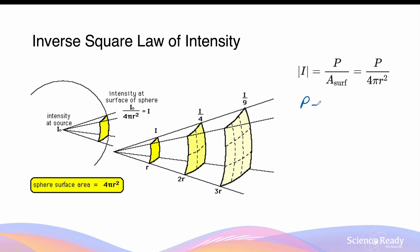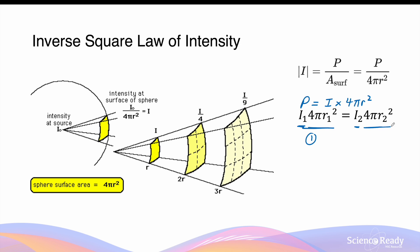We can also write the power in terms of the intensity times the surface area, which is 4πr². Now keep in mind that power is constant at any given points over which the light is propagating. So we can write I₁ times 4πr₁², which is the power at point 1. This should be equal to I₂, the second intensity, times 4πr₂². This is the expression for the power at the second point. The power at these two points should be equal, which is why we can write the following equation equating the two expressions that include the intensity and the distance away from the source.